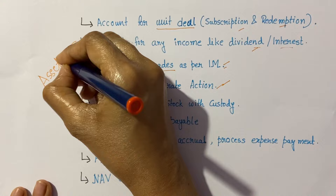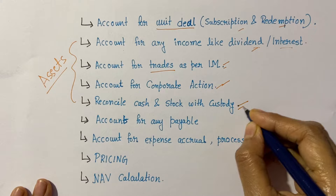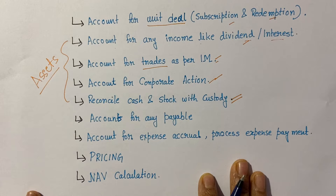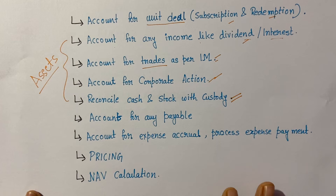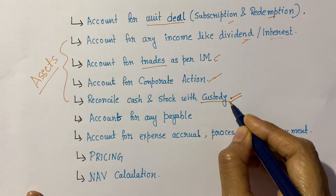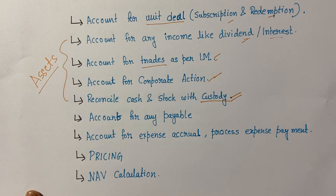One very important point is to reconcile the cash and stock with the custodian. When a fund accountant is valuing a fund, they work mostly based on data received. However, the custodian actually holds the real cash. So it is very important that on a daily basis, we do a reconciliation of how much cash is in the fund as per the fund accountant versus how much is there as per the custodian. The same goes for stock as well.